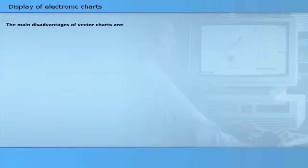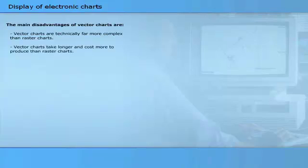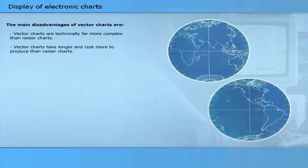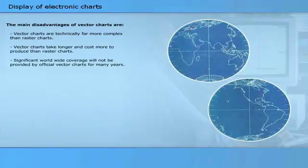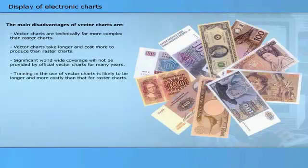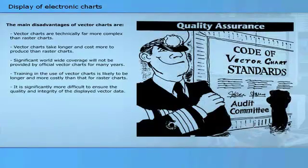The main disadvantages of vector charts are: vector charts are technically far more complex than raster charts. Vector charts take longer and cost more to produce than raster charts. Significant worldwide coverage will not be provided by official vector charts for many years. Training in the use of vector charts is likely to be longer and more costly than that for raster charts. It is significantly more difficult to ensure the quality and integrity of the displayed vector data.